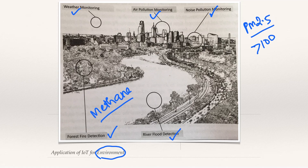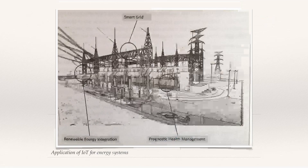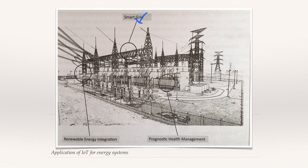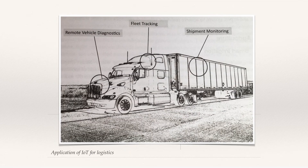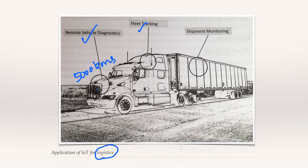Next are energy systems: smart grid for power distribution, prognostic health management of devices, and renewable energy integration such as wind and solar energy. IoT plays a major role in energy systems. For fleet and logistics, IoT handles remote vehicle diagnosis — monitoring a vehicle traveling 5,000 kilometers — fleet tracking of current vehicle location, and shipment monitoring to verify a shipment's integrity as it crosses boundaries.